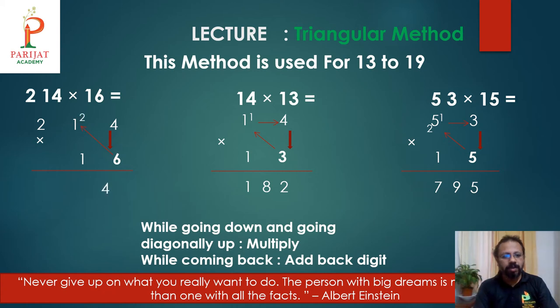Then 6 times 1 is 6 plus 2 is 8. 8 plus back digit 4. 8 plus 4 is 12. Carry over 1. And 6 times 2 is 12. 12 plus 1 is 13. 13 plus 1, 14 is 14.